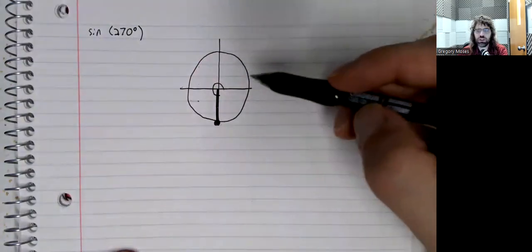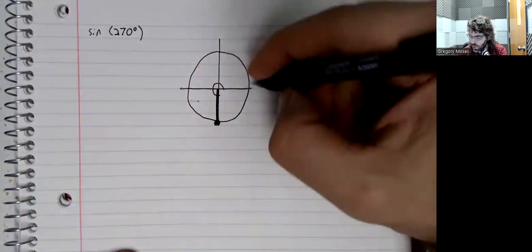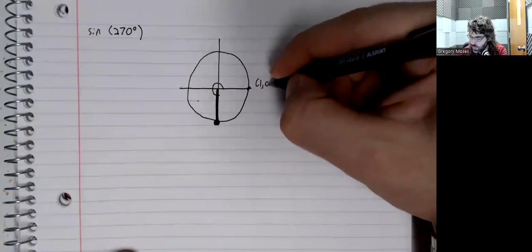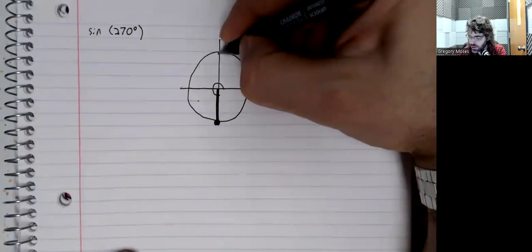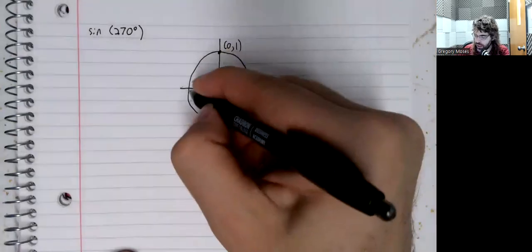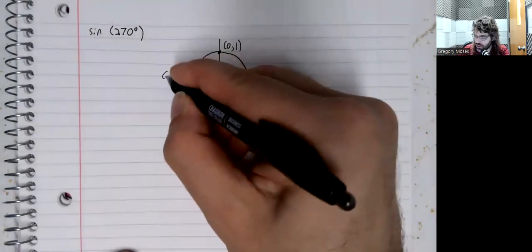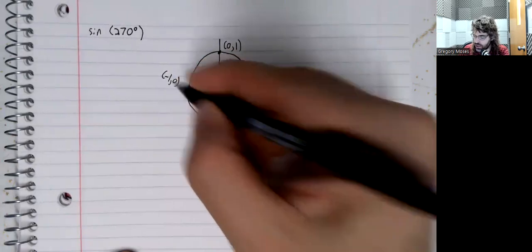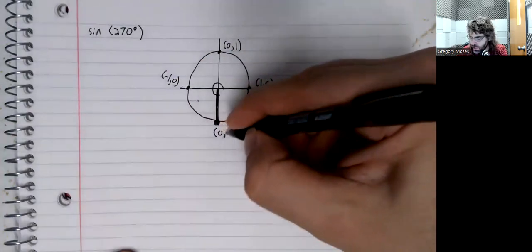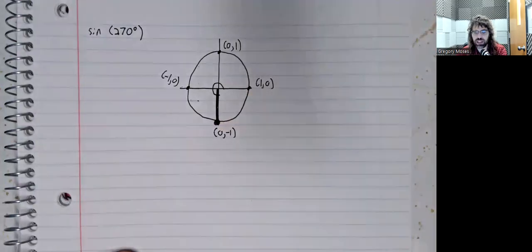And this is a unit circle. It has radius one. This point over here is the point (1,0). This point up here is the point (0,1). This point over here is the point (-1,0). This point down here is (0,-1).